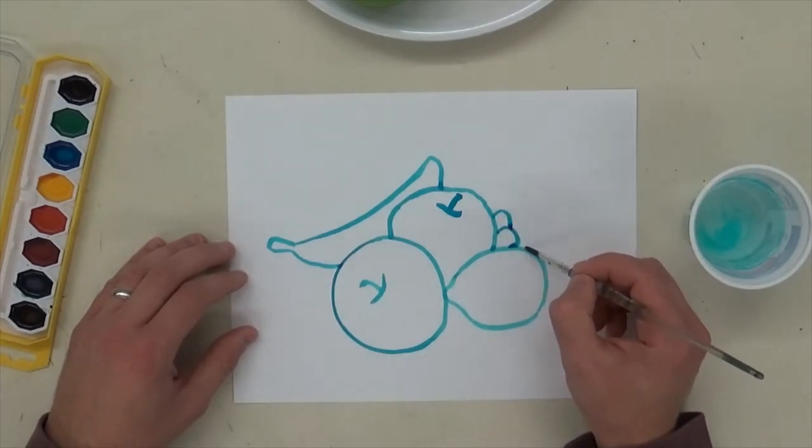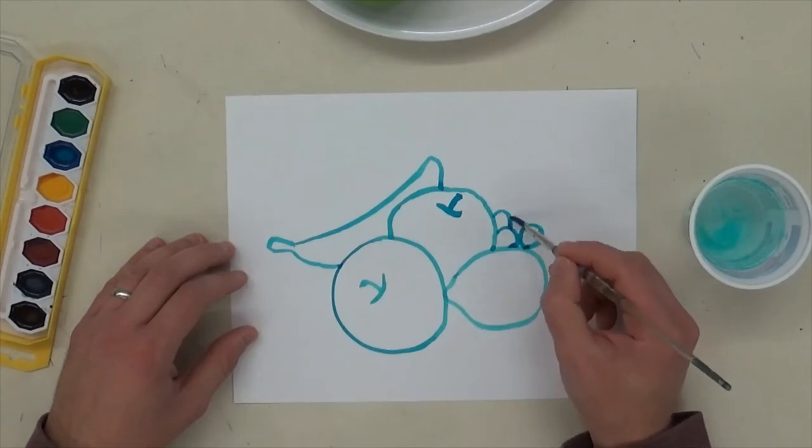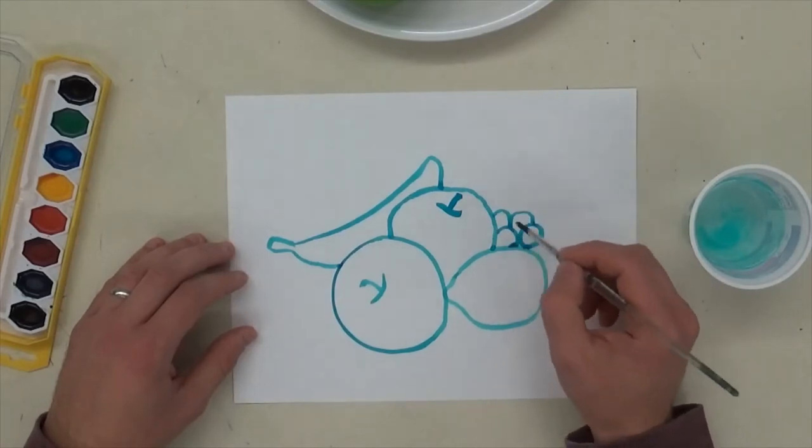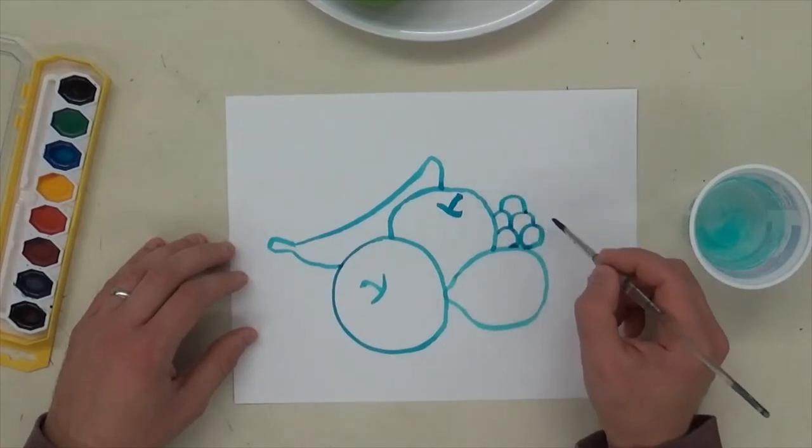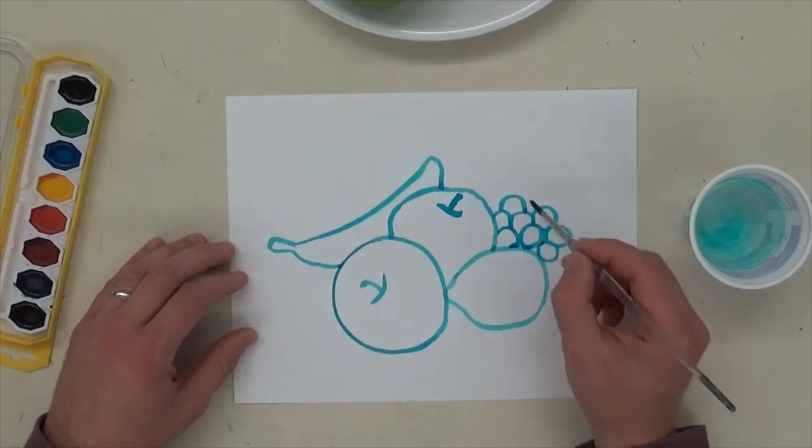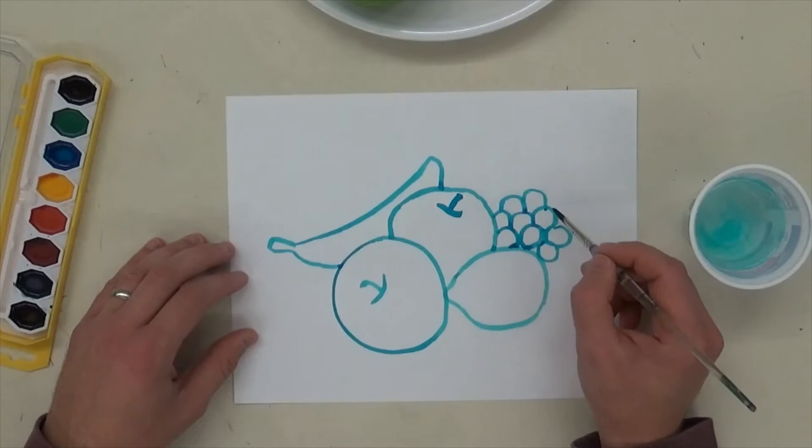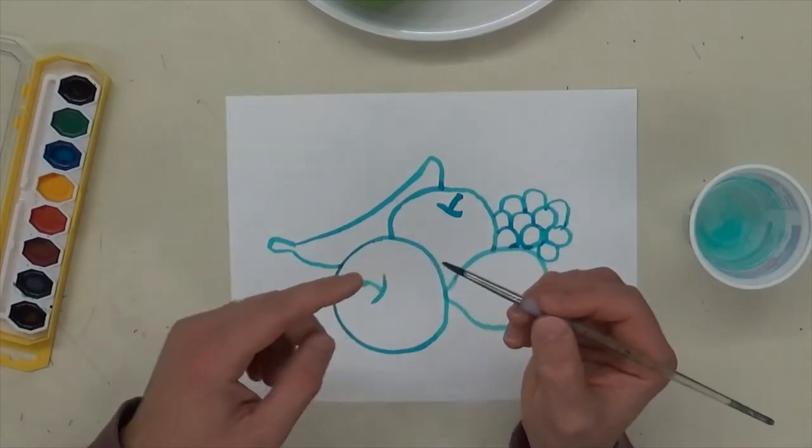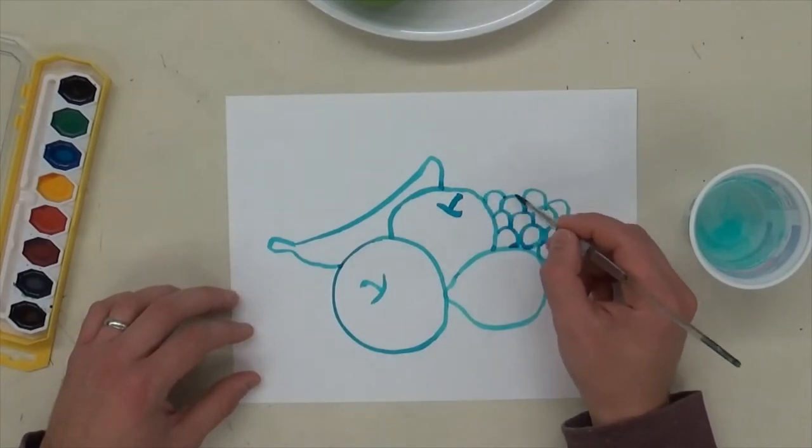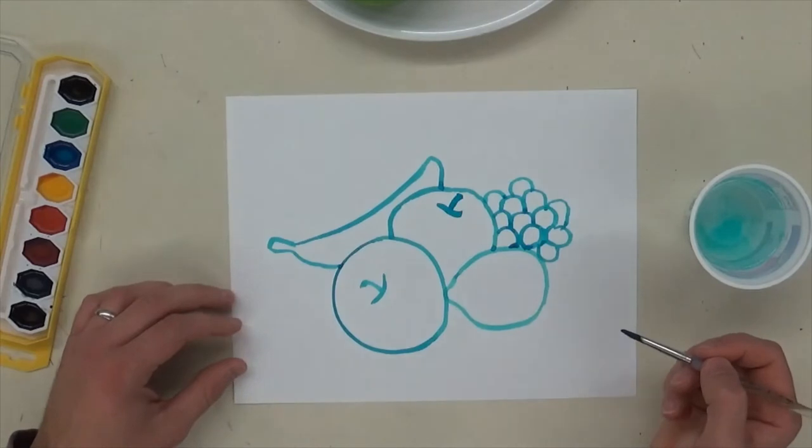So you could almost draw it like ovals with little rainbows coming out the top and it makes it look like the bananas or the grapes are more 3D. So overlapping is just a trick artists use to make their artwork look more realistic. So there we go. And I'm just using the tip of my brush to draw with.